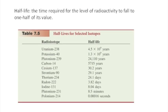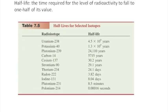So half-life is the time required for the level of radioactivity to fall to one-half of its value. And so here's just some different isotopes so you can get a feel for the wide variety of half-lives. For example, uranium-238, the one that's found in the soil, has a half-life of 4.5 times 10 to the ninth years. That's 4.5 billion years for half of the original sample to decay.